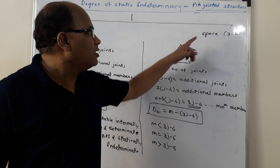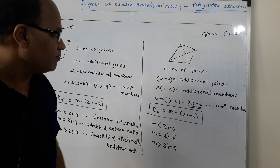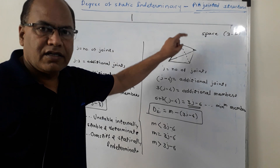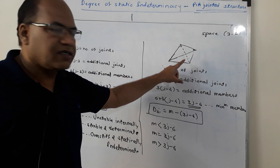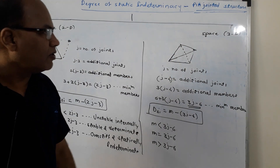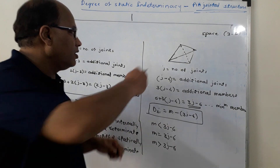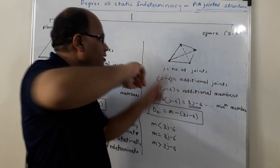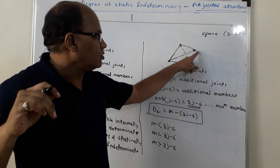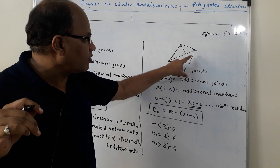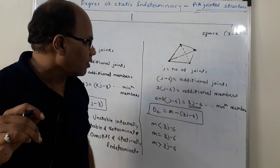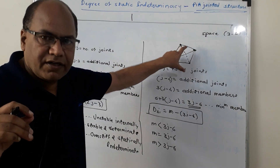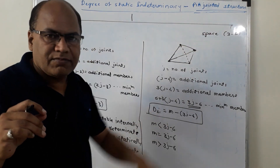Now let us see what happens in case of a space, that is 3D pin-jointed structure. Here, the most elementary stable structure is a tetrahedron. In a tetrahedron, there are four joints and six number of members are required to connect these joints. So, four joints and six members in the initial elementary structure for the space arrangement.